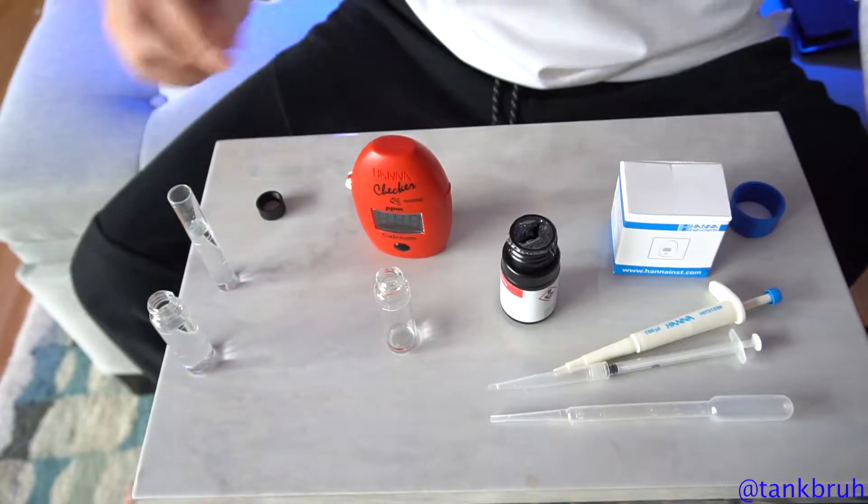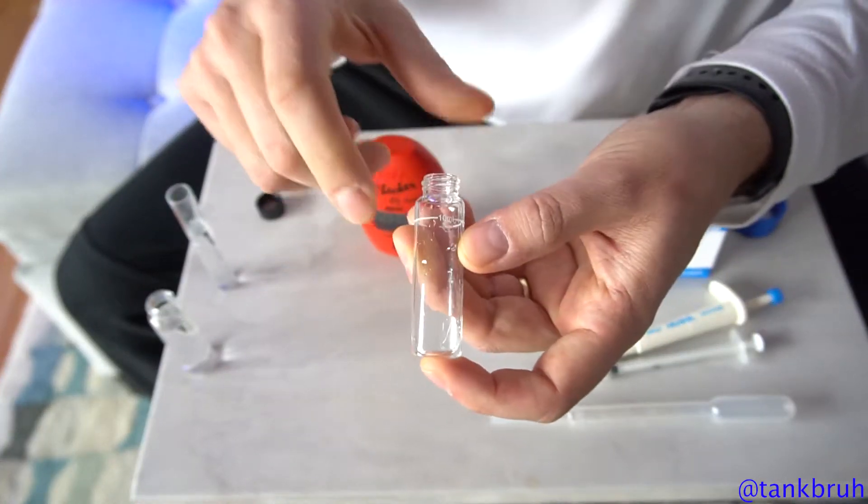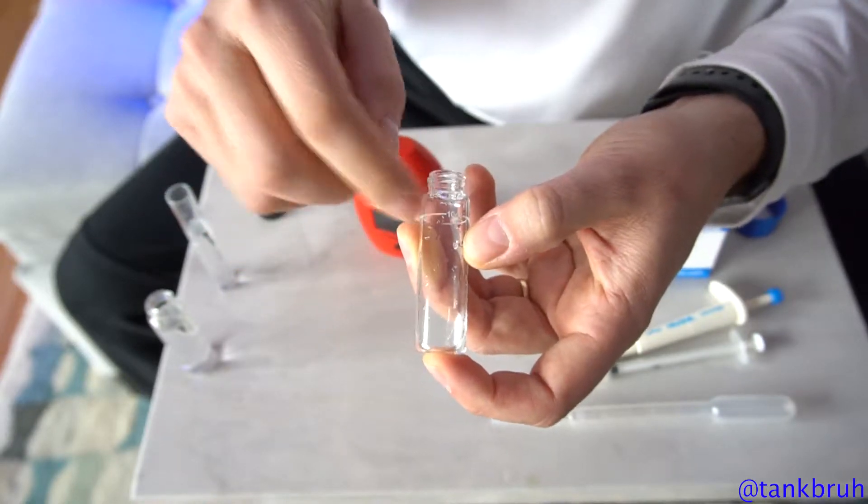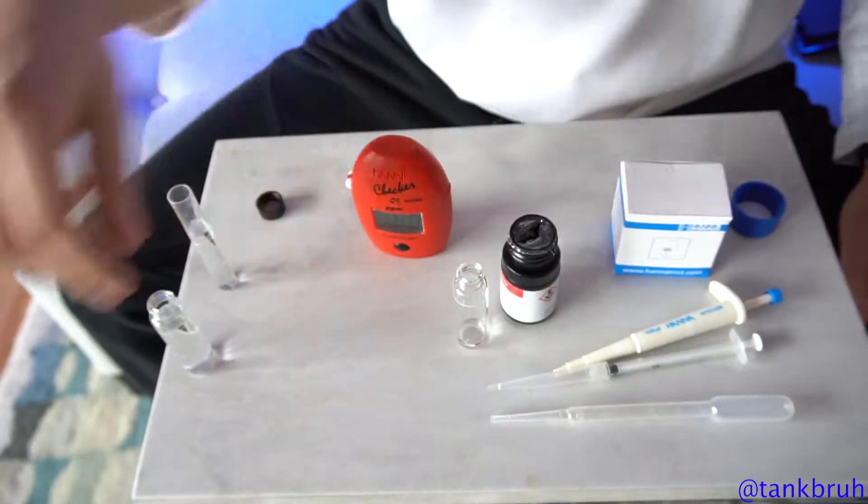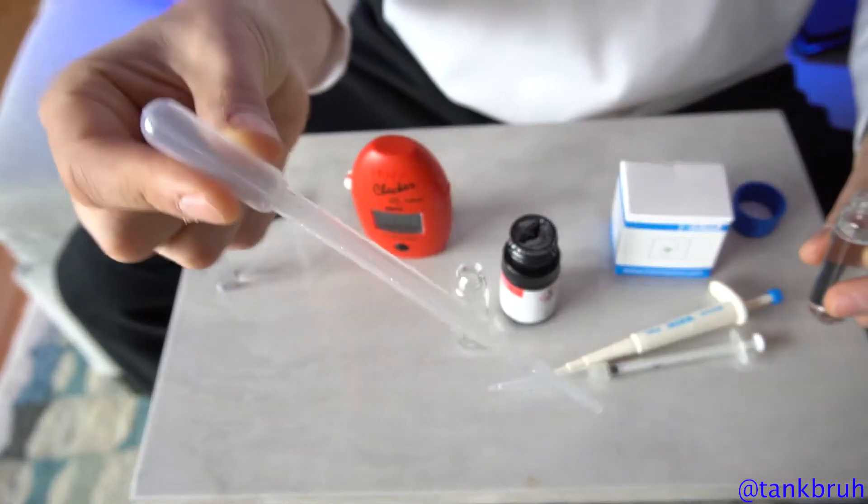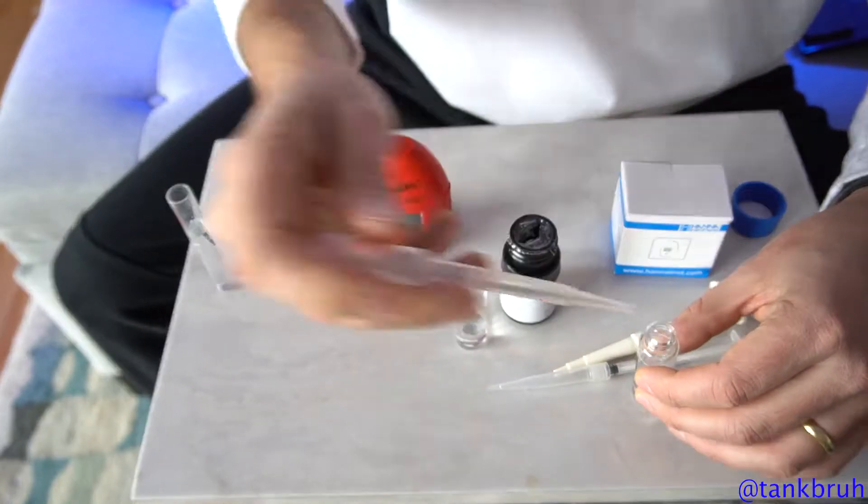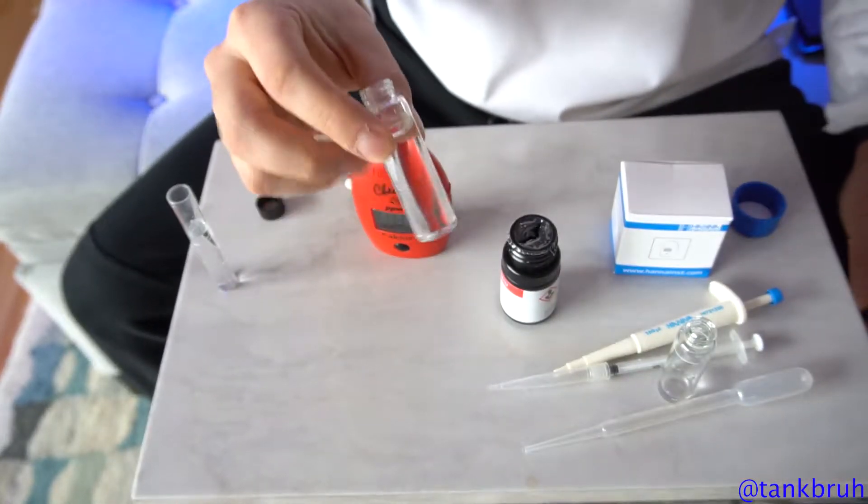Now step two is to basically fill the rest of your test tube with RO water all the way up to the line. I have a sample here of RO water. I usually use this thing. I believe it's called a pipette. Perfect.